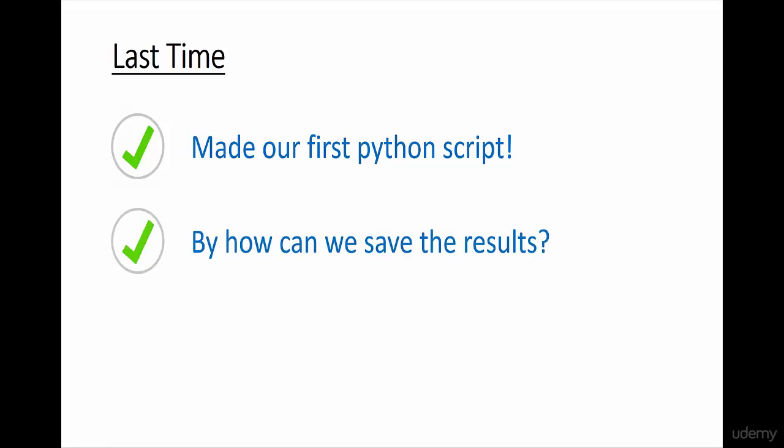In the last section, we managed to print some numbers to the screen by running our very first Python script. While that was cool, I'm wondering, how can we save the answers that Python's shell gave us back? You know, in case we wanted to use them for later.